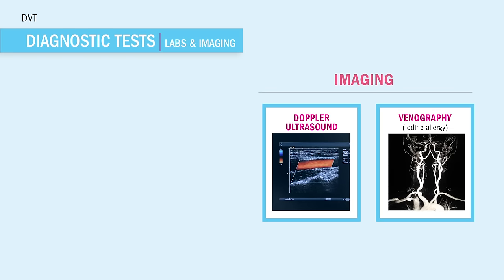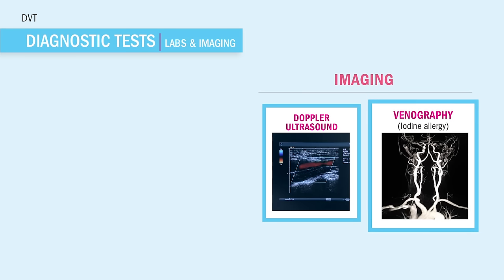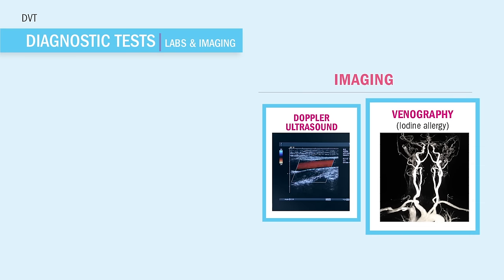Now if that doesn't work, then we cut that patient open and inject contrast dye into the veins. This contrast highlights the vein to see where the clot is located — this is called a veinography. Now when the same exact thing is done to visualize clots in the heart, it's called an angiogram. So it's just fancy words for an x-ray picture we take after injecting dye into the vessel.